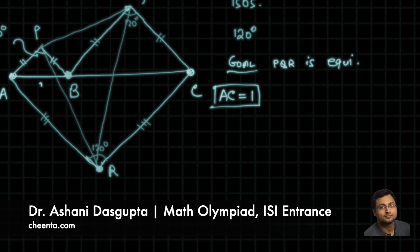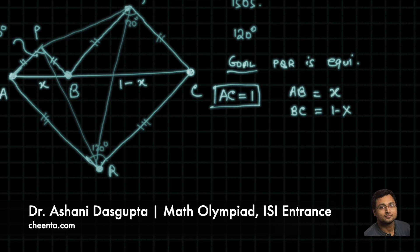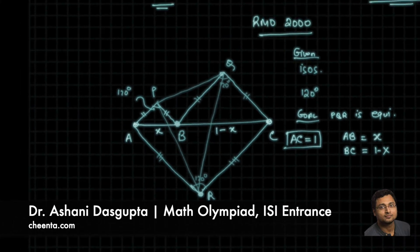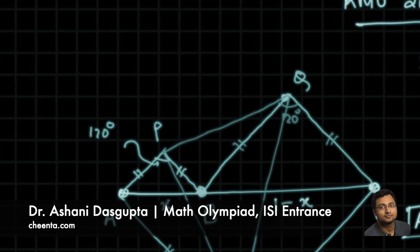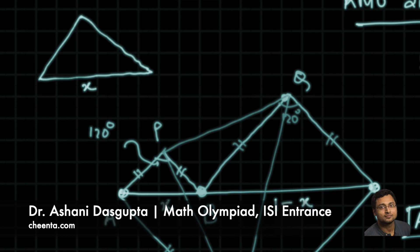Assume that AB is x, then BC is 1 minus x. Now if you look at triangle APB — let's draw it here — this base length is x and this angle at the top is 120 degrees. It's given that it's an isosceles triangle, so you can easily find out the length of the sides.